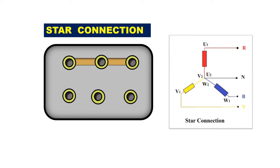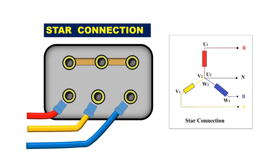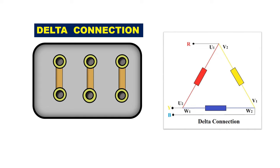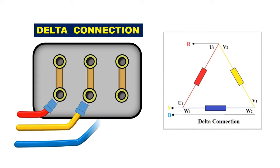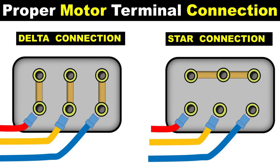If motor connection is done in star, then what you only need to do is connect R, Y, B — all three phase power supply — to the below three terminals. If motor windings are connected in delta, then by connecting power supply to motor to run it, take all the R, Y, B phase power supply and connect to the motor terminals like this. You can see here how to connect the wires in this connection.